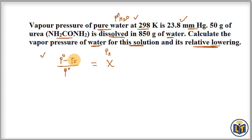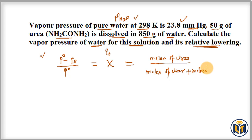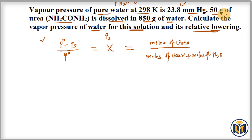The ps value will give us the vapor pressure of water in the solution. x is the mole fraction of solute. Since the mass of solute and solvent are given, we can convert them into moles using molar mass. The mole fraction equals moles of urea divided by moles of urea plus moles of solvent, which is H₂O.